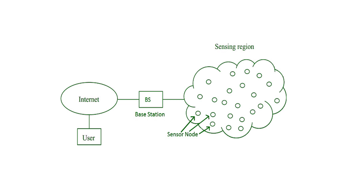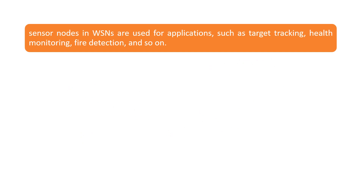The collection of sensor nodes is known as the sensing region, from where the details are shared to the user through the internet. This is the basic diagram for WSNs, and by seeing an example we can better understand what is a wireless sensor network.